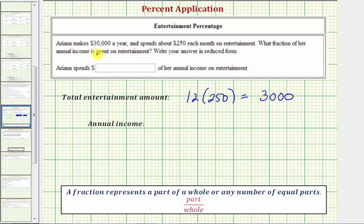And we know her annual income is 30,000. Therefore, the fraction of her income spent on entertainment would be $3,000 out of $30,000.